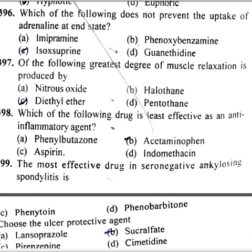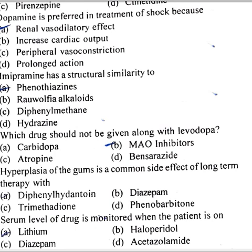Which of the following drugs is least effective as an anti-inflammatory agent? Acetaminophen. Choose the ulcer protective agent: sucralfate. Dopamine is preferred in treatment of shock because of its renal vasodilatory effect.